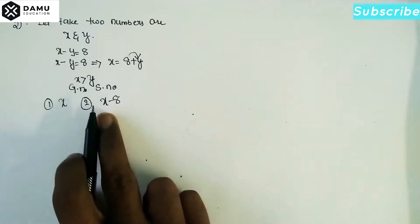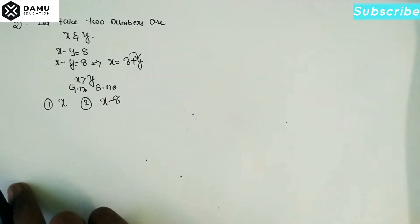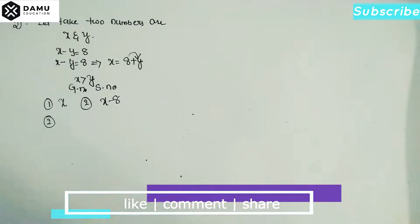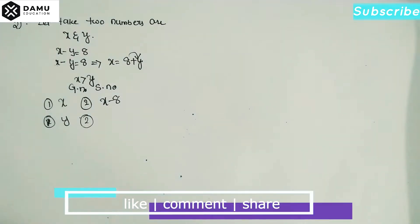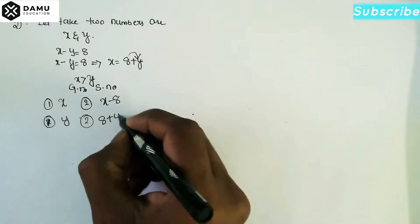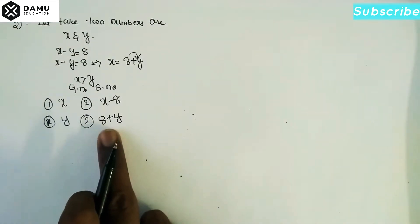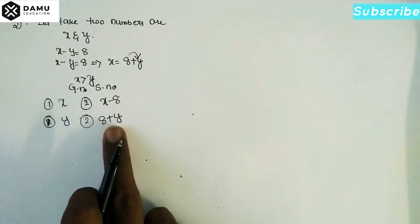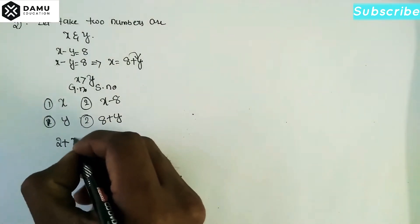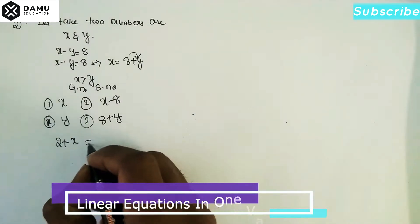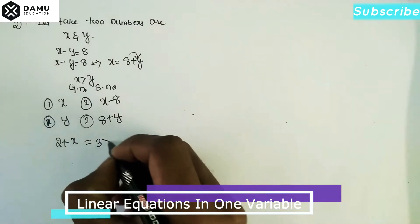We can also express y from the equation: y equals x minus 8. Now, the second condition states that if 2 is added to the bigger number x, the result will be 3 times the smaller number y — that is, 3 times y.